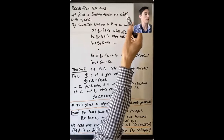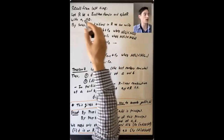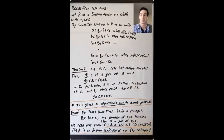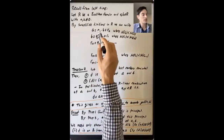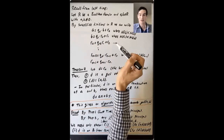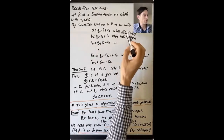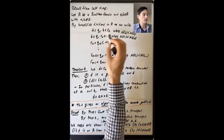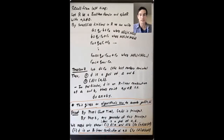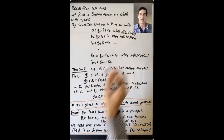Let's say R is a Euclidean domain and A and B are elements of R that are both non-zero. By successive divisions in R, we have the division algorithm, and we can write A equals Q0 times B plus R0, where the norm of R0 is less than the norm of B, or maybe R0 is equal to zero.